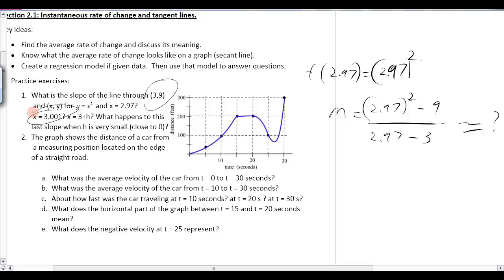So then they want you to do the same thing for 3.001, and then they want you to do the same thing for 3 plus h. So the 3.001, 3.001 squared minus 9, divided by 3.001 minus 3, and that's going to equal some number.